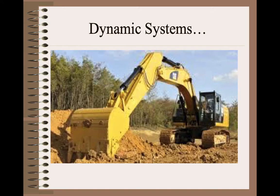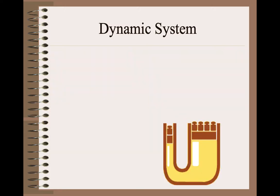Dynamic systems — basically, dynamic means things that can move. There'll be two types of systems: pneumatic systems that make use of gases, and hydraulic systems that make use of liquids. But they're all fluid dynamic systems, meaning there's always a fluid moving in these systems.